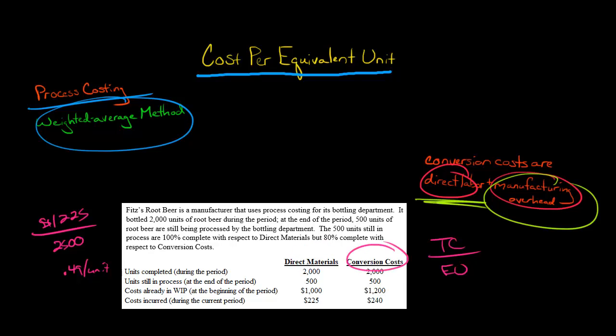Now, conversion cost is a little different. We've got the 2,000 units that were completed during the period, and we have 500 units that are still in process, and remember, they are only 80% done.